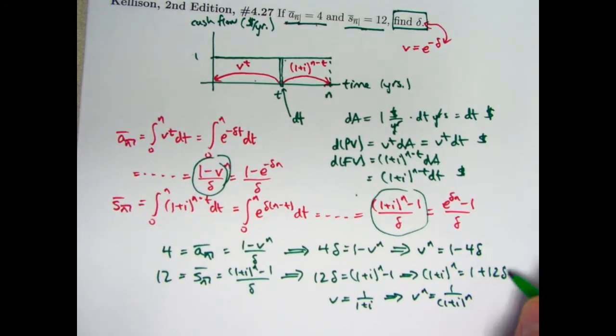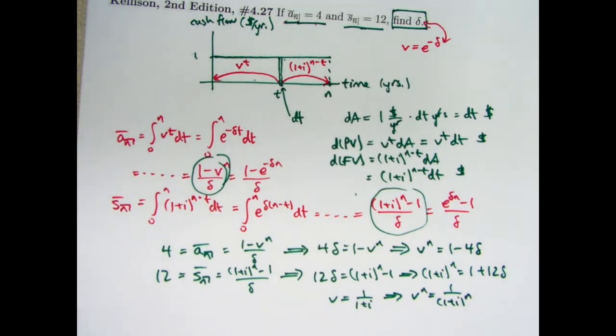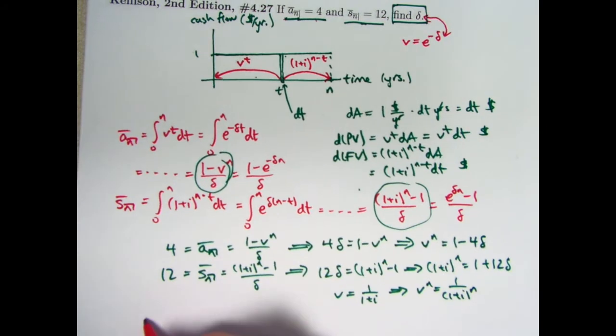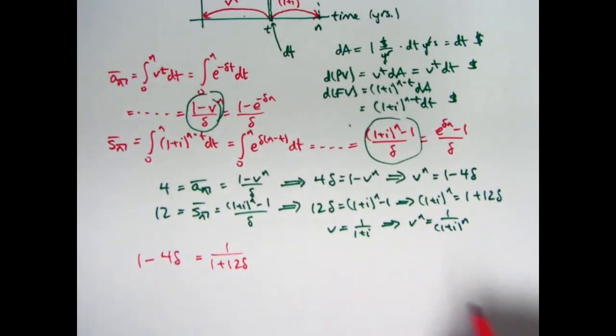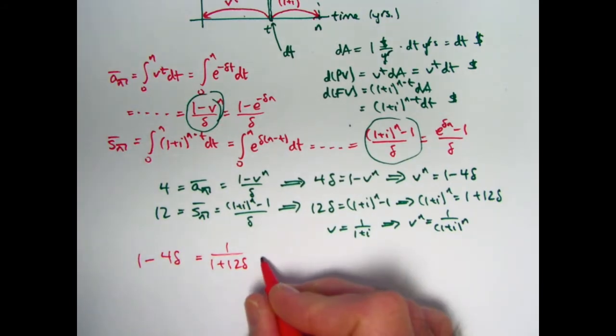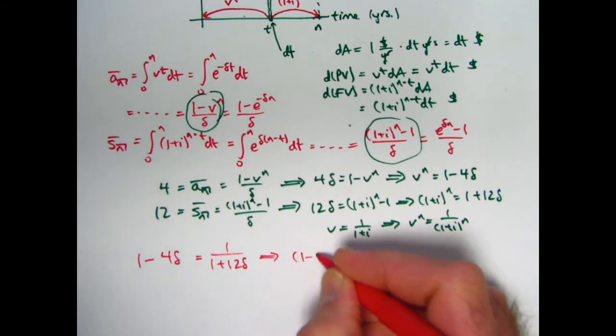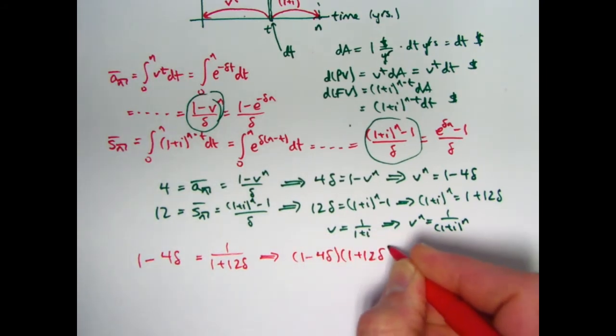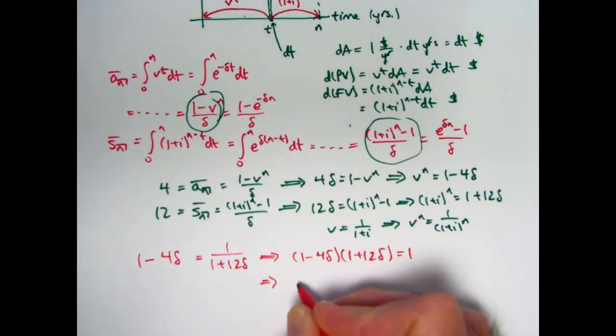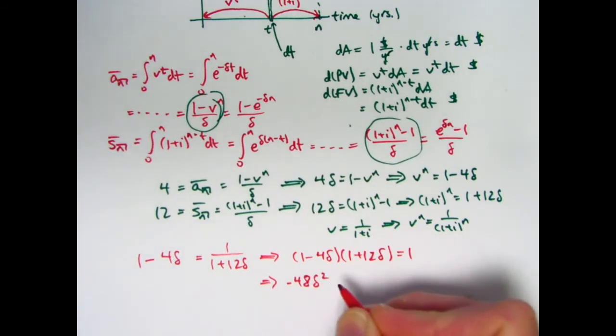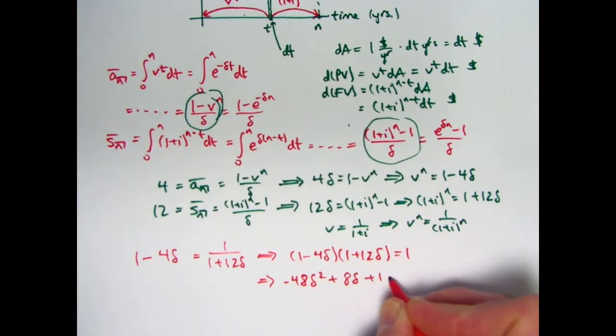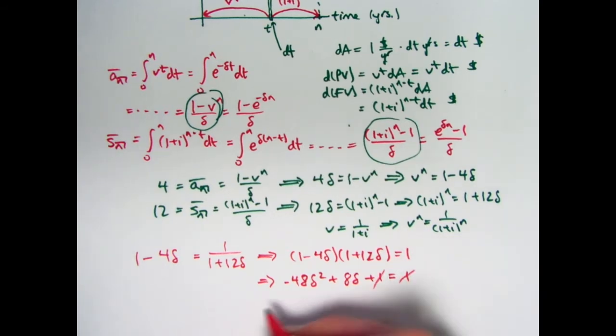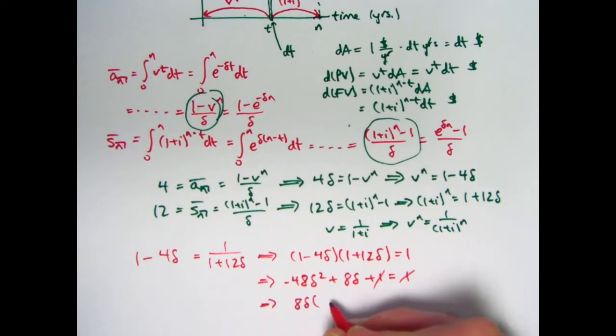Excuse me. So I can say these two things involving delta are reciprocals of each other. I can say 1 minus 4 delta is 1 over 1 plus 12 delta. And that's going to give me a quadratic equation in delta. I can multiply both sides by 1 plus 12 delta to get this. Go ahead and multiply that out. I'll get negative 48 delta squared. Excuse me again. Plus 12 delta minus 4 delta is plus 8 delta. And then plus 1 equals 1. We don't need the quadratic formula here.